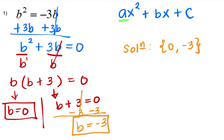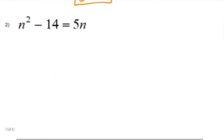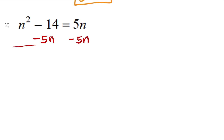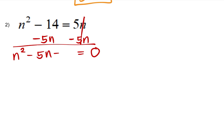Let us try another problem, number 2. The first step we need to do is to make the equation equal to 0 so we can start factoring. So the inverse of positive 5N — I am going to do minus 5N on both sides. This will make the equation equal to 0. On the left side there is nothing we can combine because there are no like terms, so we will just drop them down: N squared minus 5N minus 14.